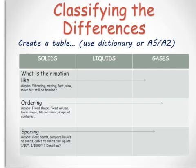Now you can look at ordering. Think in terms of fixed shape, fixed volume, loose shape, which one fills the container and the shape of the container and so on.